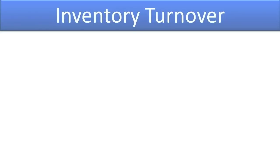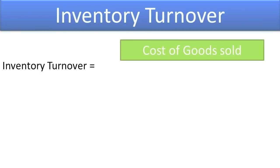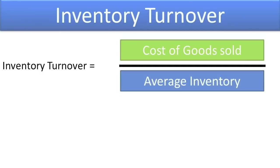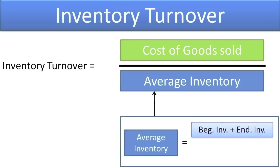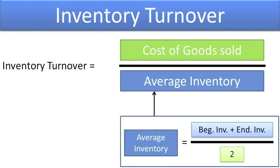How do you compute the inventory turnover ratio? The inventory turnover ratio is computed as: cost of goods sold per the current year income statement, divided by average inventory — where average inventory is computed as beginning inventory plus ending inventory, divided by 2.